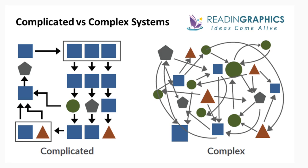Here's a nice example: the municipality of Utrecht wants a new bike bridge over the Amsterdam Rijnkanaal. The municipality is the principal and the objective is clear — a contractor can draw up plans and make an offer. A complicated problem can be solved by using traditional engineering, project management, process management, and top-down management styles.